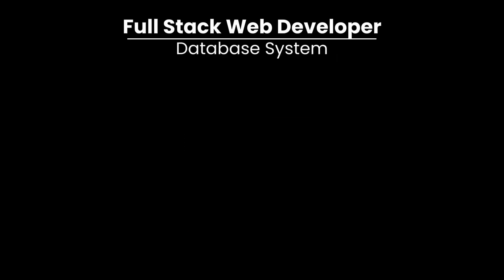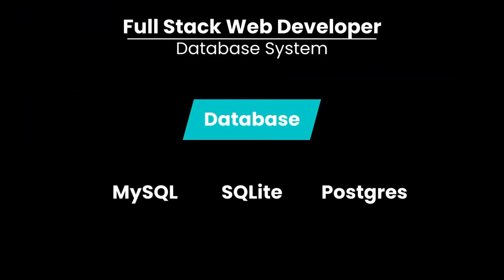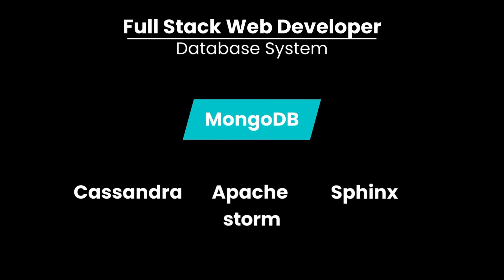Database System Roadmap for Full-Stack Web Development. MySQL, SQLite, and Postgres are relational database management systems where data is stored in table-like schemas. This is good for storing business data and these use SQL. MongoDB, Cassandra, and Sphinx are NoSQL databases. Their only commonality is that they do not use a relational database schema. This type of database covers a wide range of technologies and can be used to find key-value DBs, GraphDBs, StreamingDBs, etc.